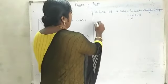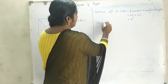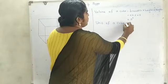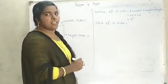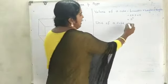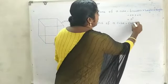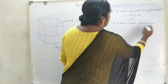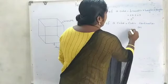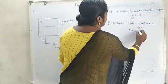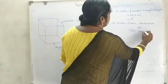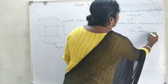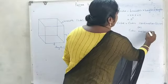Next, the unit of volume of a cube. The unit of a cube is equal to cubic centimeter or cubic meter. The short form is cm³ or m³.